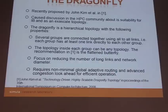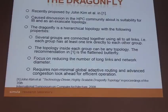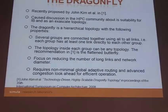A challenge with the dragonfly is that it puts certain requirements on the underlying technology, because it requires non-minimal global adaptive routing and advanced congestion look-ahead for efficient operation. This means we need to know more about the situation at different places in the network in order to make a good routing decision, and this is not readily available in current technology. It is also complex to route, needing additional features and additional virtual lanes in order to be routed deadlock-free, which is much more complex compared to the fat-tree.